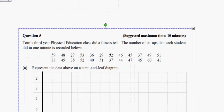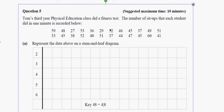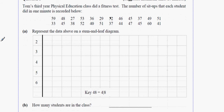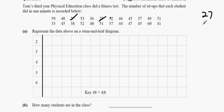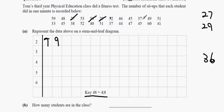Question 5: Tom's third-year PE class did a fitness test. Represent the sit-up data on a stem and leaf diagram. For the 20s: 27 and 29, so write 7 and 9. Make sure to include a key. For the 30s: we have 36, 37, 33, 38, and another 37. So write 3, 6, 7, 7, 8.